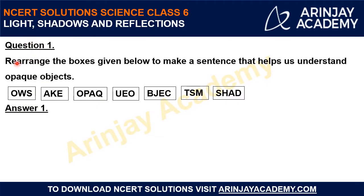Question 1: Rearrange the boxes given below to make a sentence that helps us understand opaque objects. We have some boxes present here, and each box contains some letters. We need to rearrange these boxes such that they form a meaningful statement. There is a hint: the sentence we create should help us in understanding opaque objects. Take your time and try to rearrange them to form a meaningful sentence.